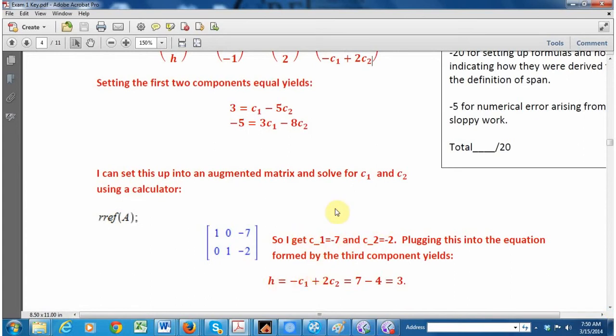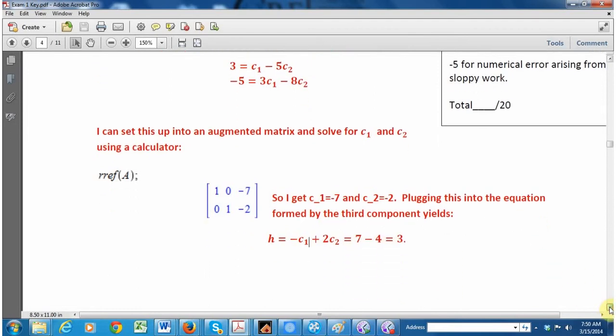And once I have the solution for c₁ and c₂, I can just look at that last row and set the components equal. And since I know what c₁ and c₂ are, I can pop them in there and I get the solution for h.